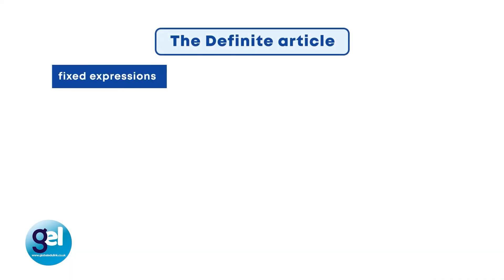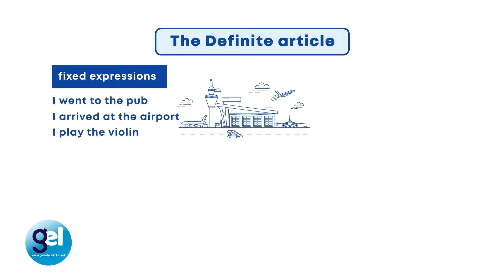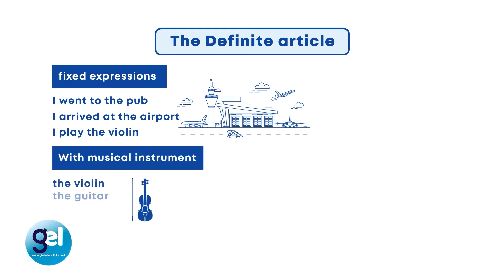Let's look at the definite article. The definite article is the. We use the in many fixed expressions — for example: I went to the pub; I arrived at the airport; I played the violin. We always use the with musical instruments: I play the violin, he plays the guitar, they play the flute. We always use the definite article before a singular countable noun that we've mentioned before. For example: there's a darts game on in the pub tonight — it's the game between the rival teams.